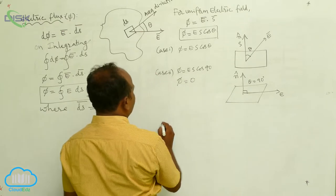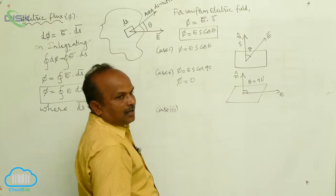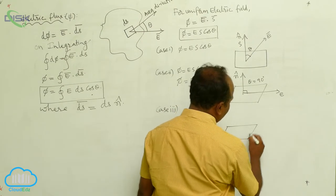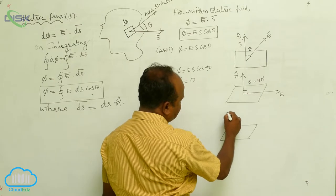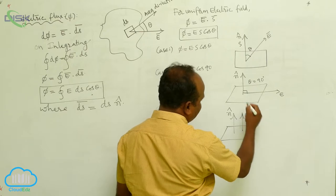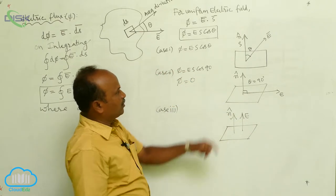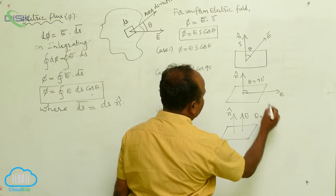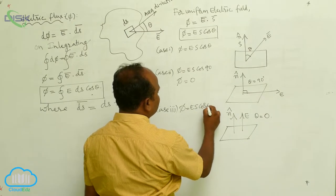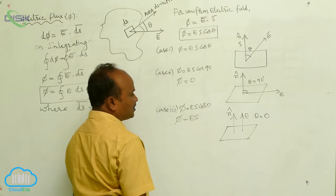Case 3: Consider another area with its area vector. The electric field intensity and area vector are both in the same direction, so theta is equal to 0. Therefore, phi equals E·S·cos0°. Since cos0° equals 1, phi is equal to E·S.